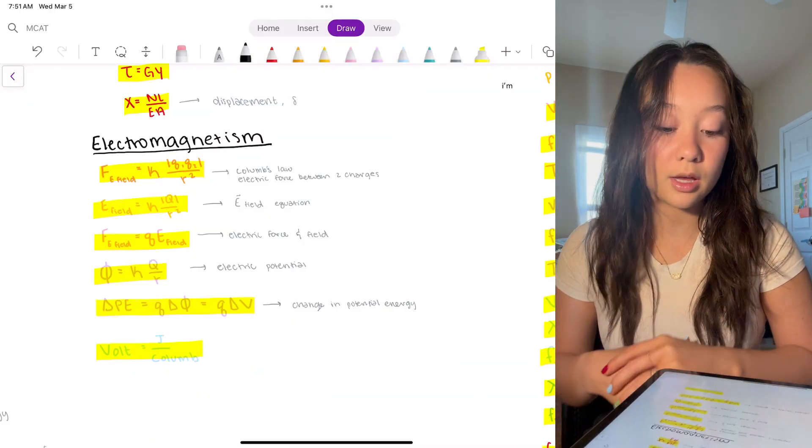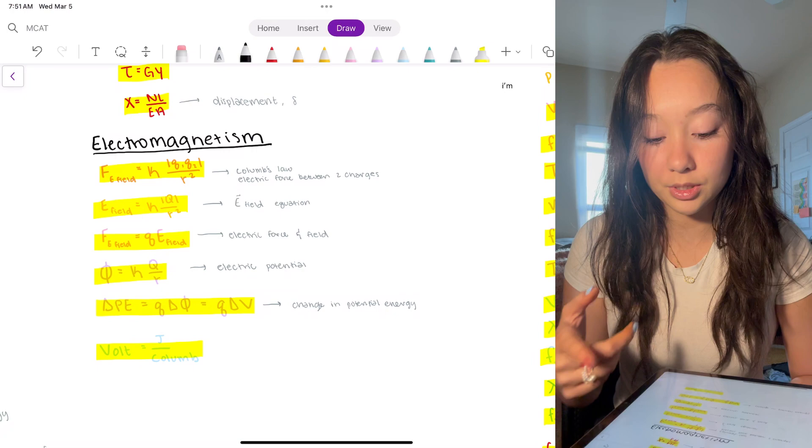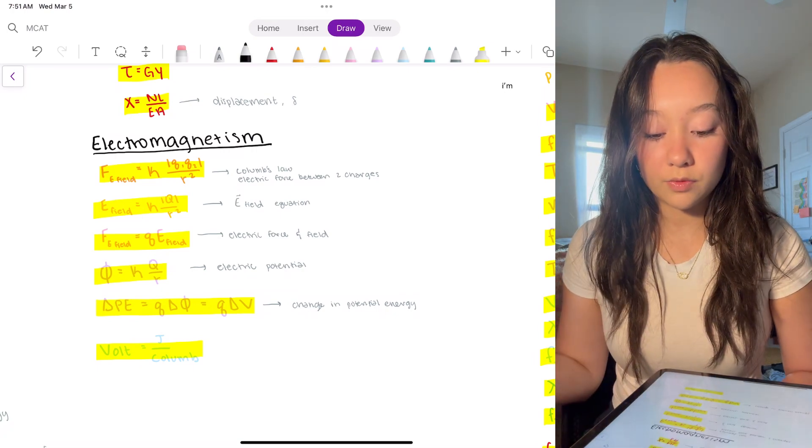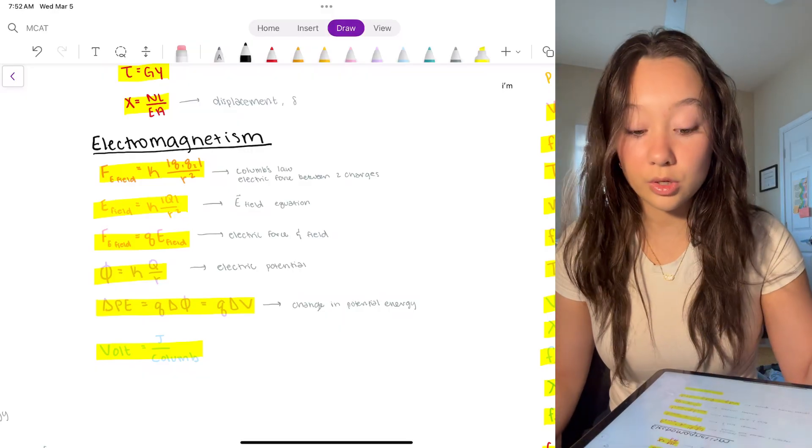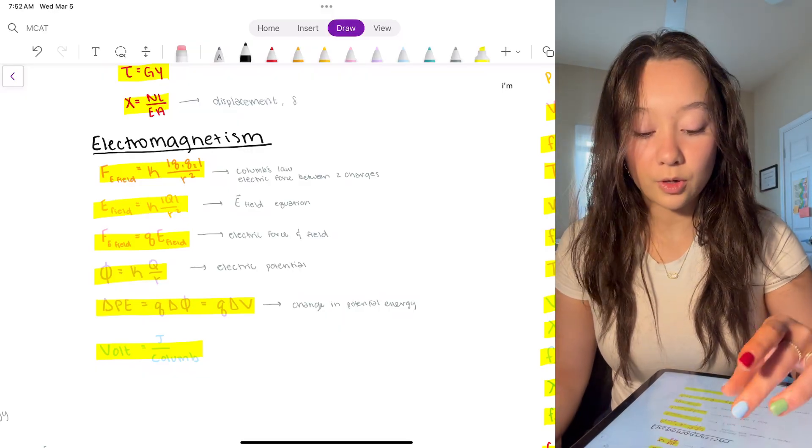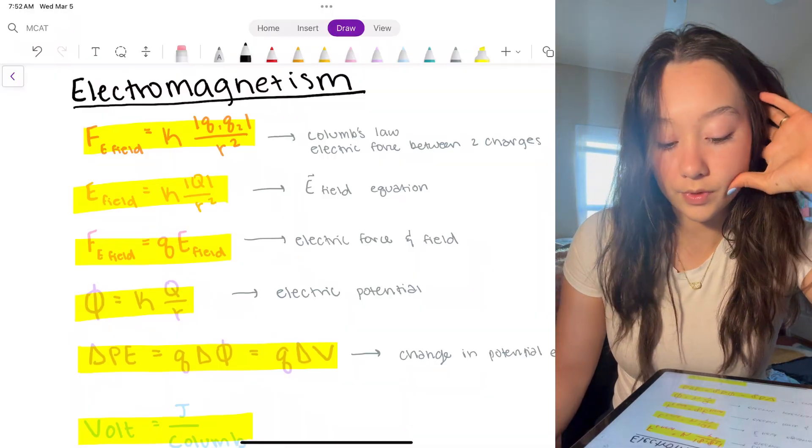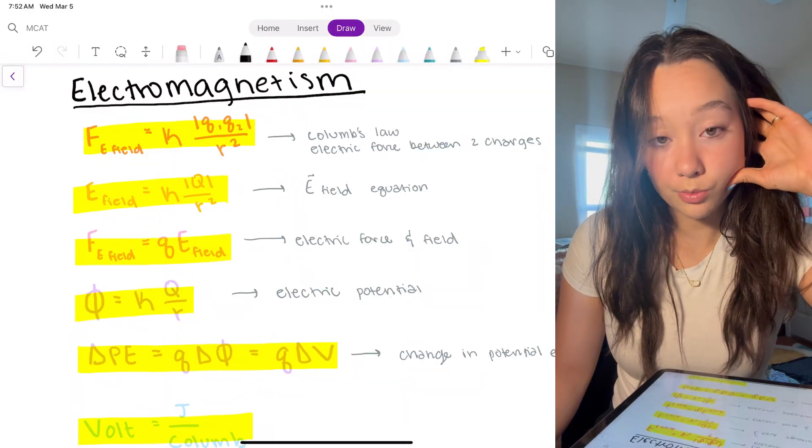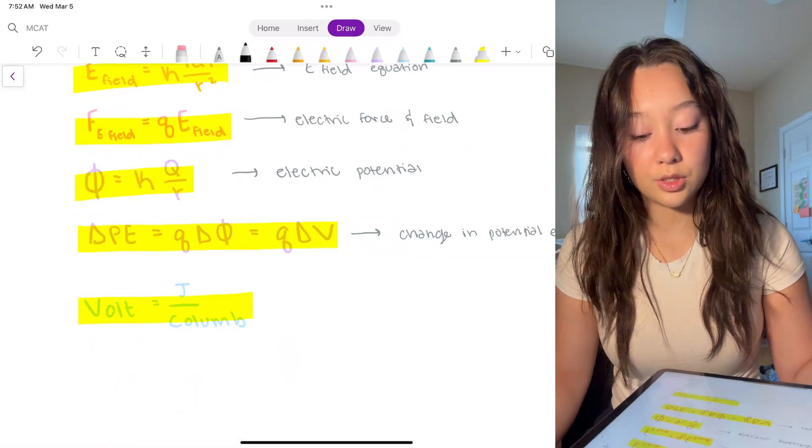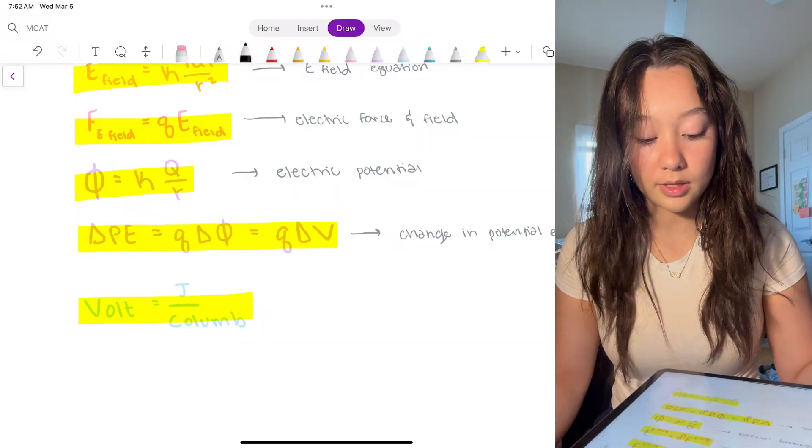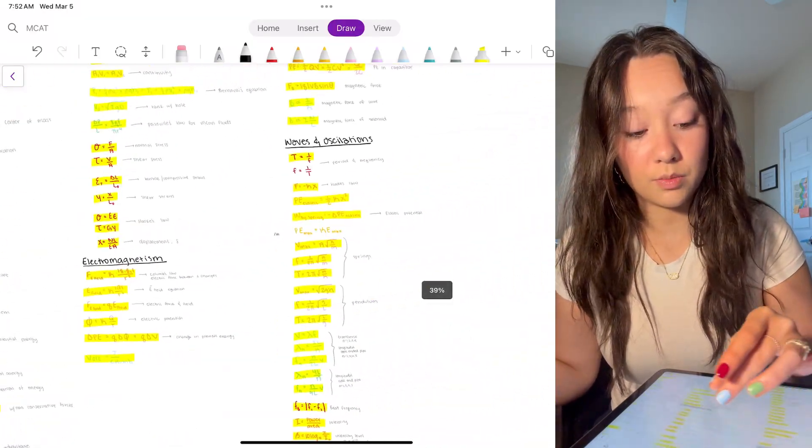Electromagnetism, a lot of these I've realized that they will give you the equations for these, but understanding these relationships are helpful. Force and electric field, KQQ over R squared. Electric field, K1Q over R squared. In that third equation you can see the relationship between E field and the force of an electric field. It's just multiplying it by the charge. Electric potential, change of potential energy, this has to do with the work function and all of that, and then volts is just joules over coulombs. Yeah that's pretty much it for our electromagnetism, and then we're going to move over here to circuits.